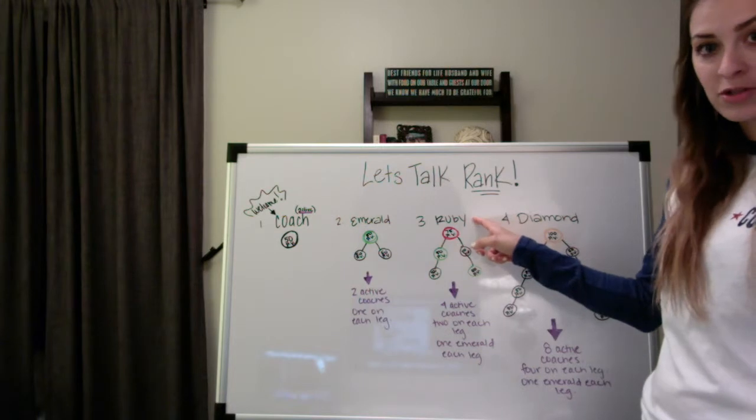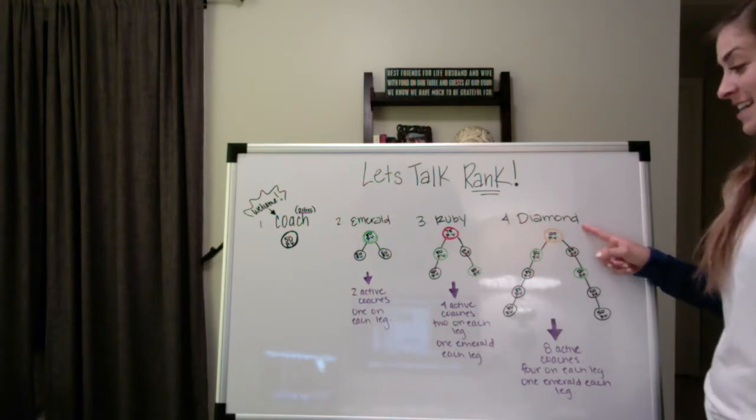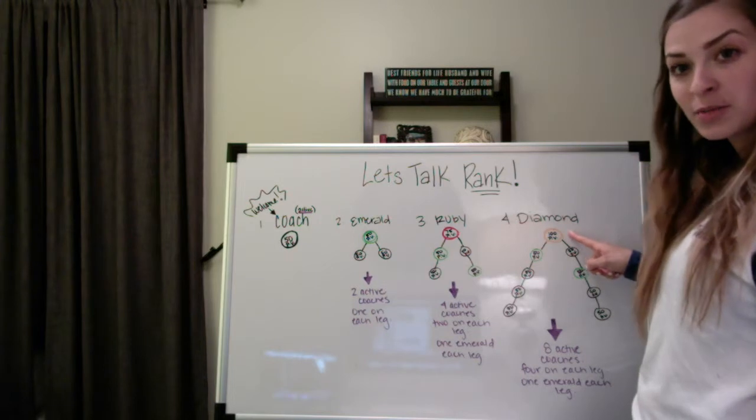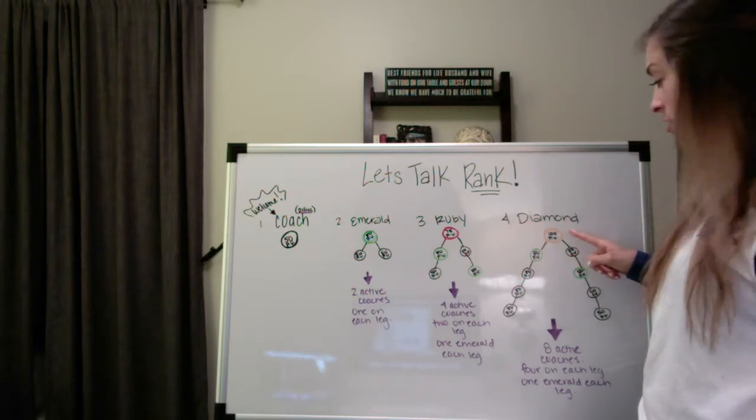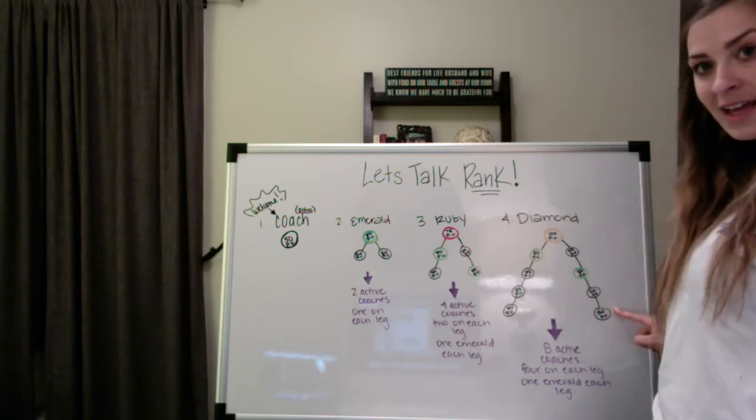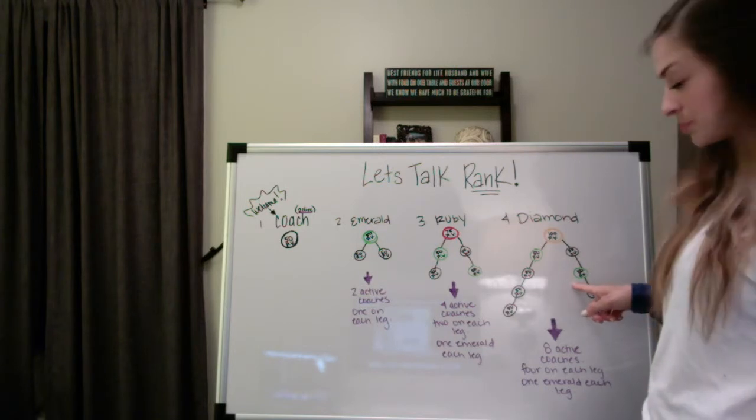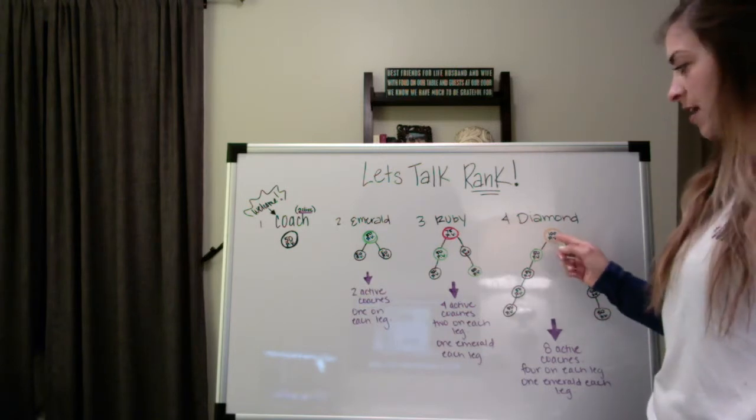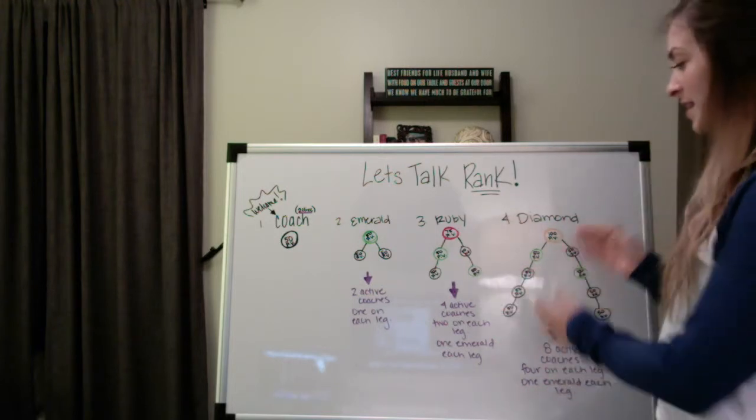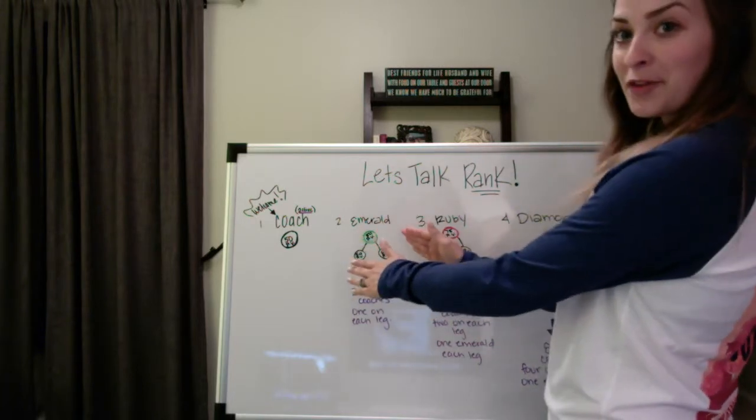The next rank advancement after Ruby is Diamond. Diamond coach means that you are active every single month with 100 personal volume from your orders. And it means that you have four active coaches on each business leg and that one of those coaches on each side is an Emerald. You could potentially have two Emeralds on each leg or you could have more than four coaches on each leg, but this is the minimum for Diamond, the minimum for Ruby, and the minimum for Emerald.